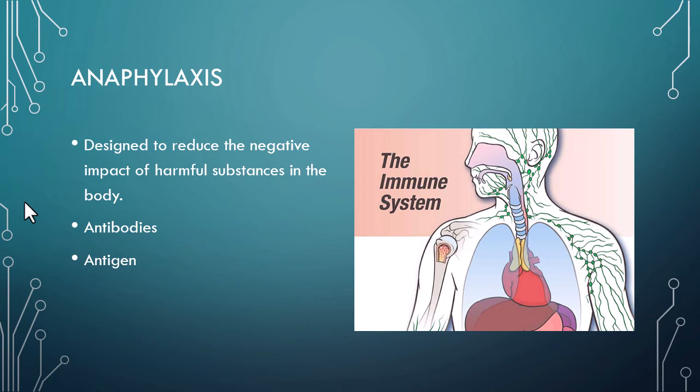Sometimes the body doesn't recognize certain things as part of itself and turns on itself, beginning to destroy normal cells — called an autoimmune disease. One example is multiple sclerosis, where the body attacks the myelin sheath — the covering of nerve cells — exposing the nerve itself. Stripping that covering, much like stripping an electrical cord, causes systems to begin to fail.